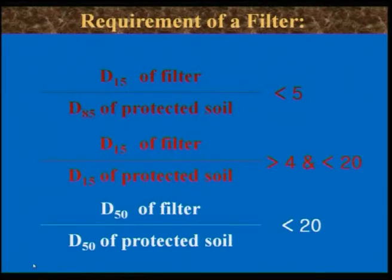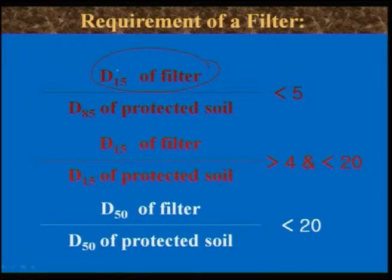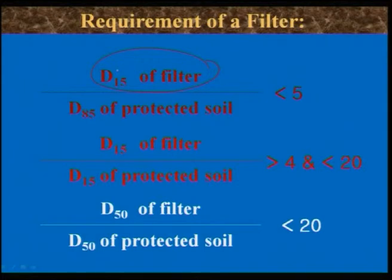The criteria for filter design are: D15 of filter divided by D85 of protected soil should be less than 5; D15 of filter divided by D15 of protected soil should be greater than 4 and less than 20; and D50 of filter divided by D50 of protected soil should be less than 20. Here D15 of the filter material means that 15 percent of the filter particles are finer than that size.